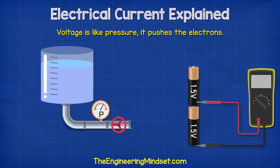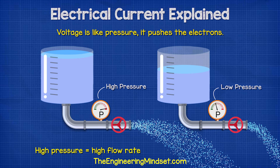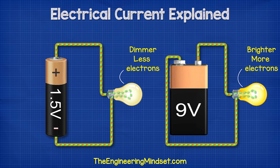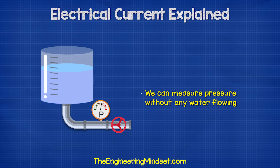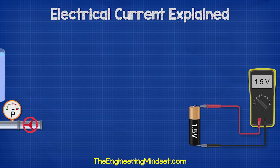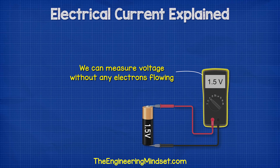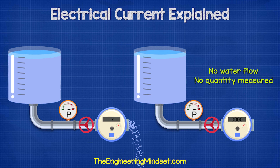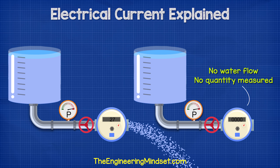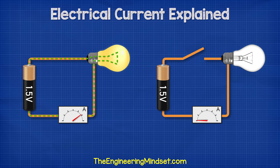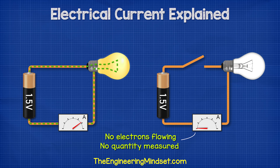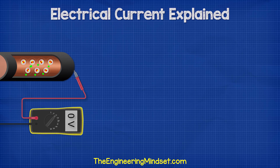Voltage is the pushing force. It's like pressure in a water pipe. The more pressure we have, the more water can flow. The more voltage we have, the more electrons can flow. We can measure pressure without there being any water flowing, and we can measure voltage without there being any current flowing. But we can't measure how much water is flowing if no water is flowing, and we can't measure the electrical current if no electrons are flowing.